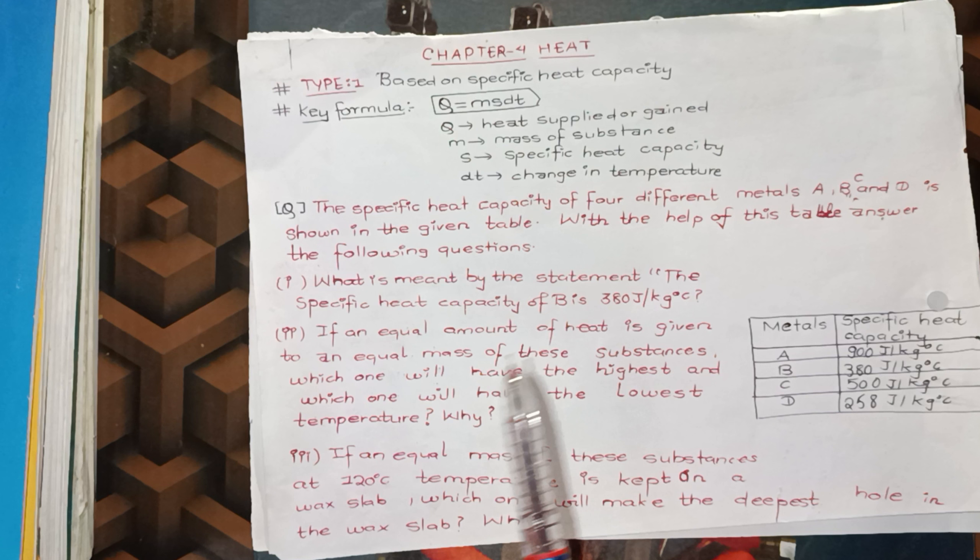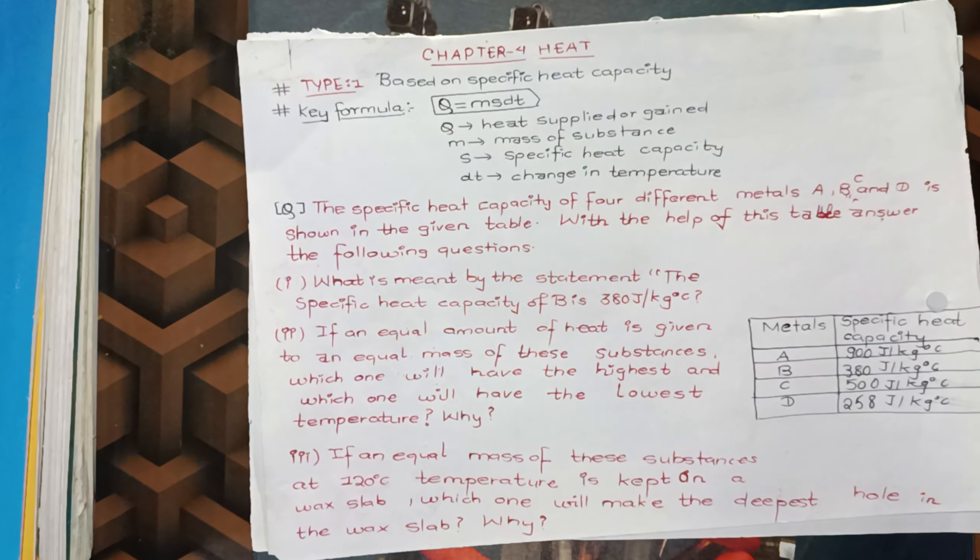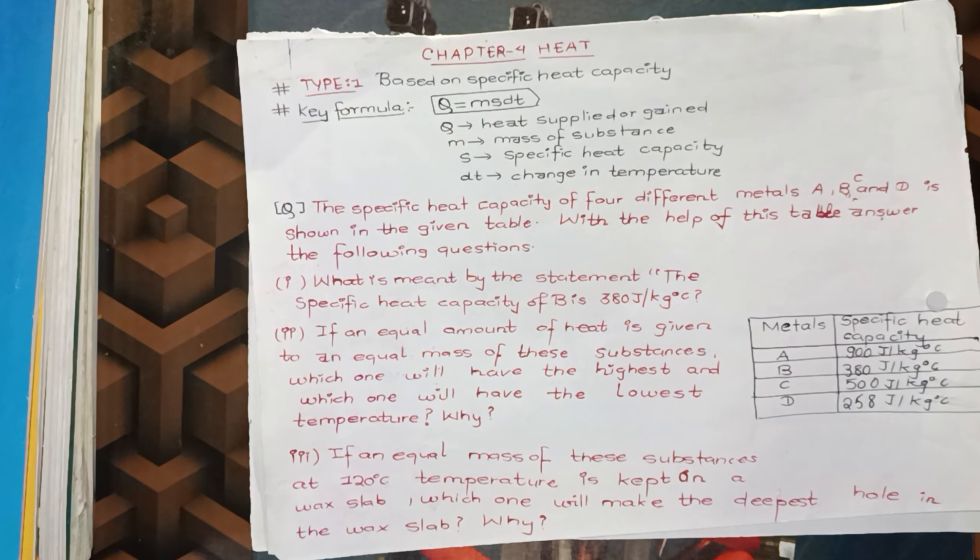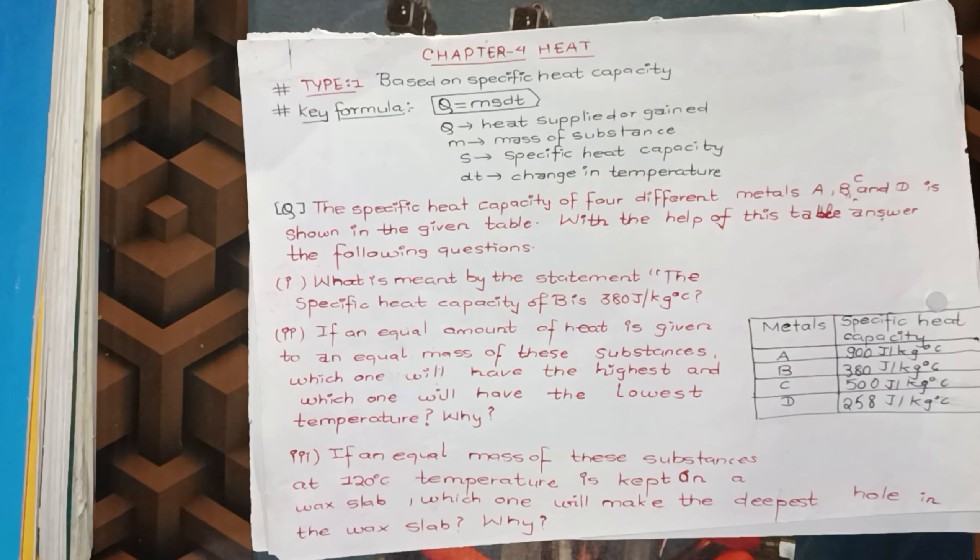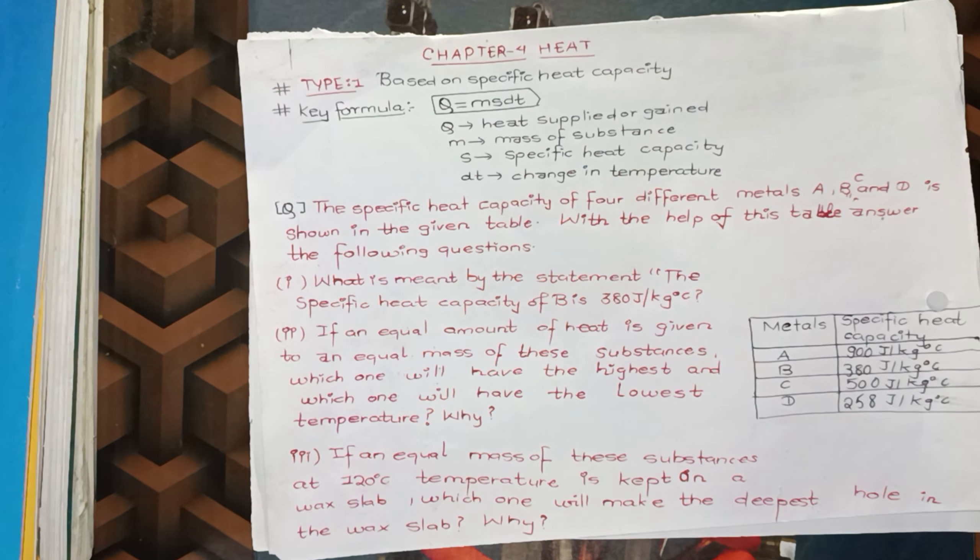I am going to use 4 metals specific capacity: A, B, C, D metals. I am going to use this information and this question. What is meant by this statement, the specific capacity of B is 380 joules per kg degree celsius?